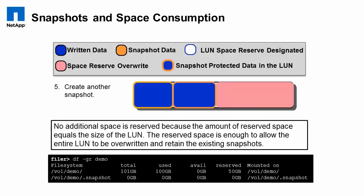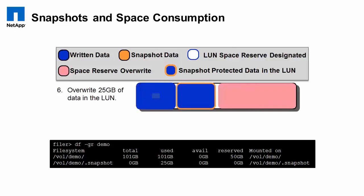You'll see this if you run the df -r command in Data ONTAP, and you'll see exactly how much is being reserved. If we overwrite 25 gigabytes of data, essentially 25 gigabytes of the existing data will become unique to a snapshot. At that point, we will no longer be able to reserve a full 50 gigabytes of writable space in the volume. So if you attempt to take a snapshot at this point, which would have the effect of locking 75 out of the 100 gigabytes, it simply won't let you do that because of the reservation setting.